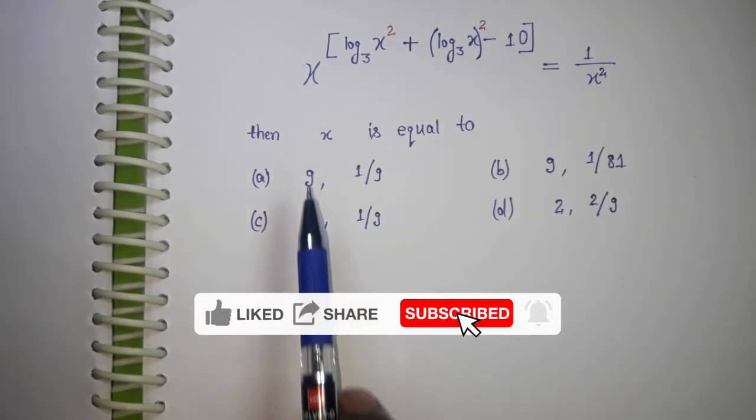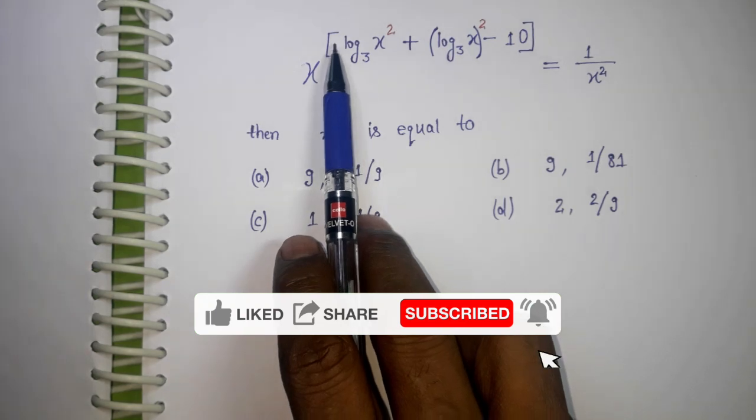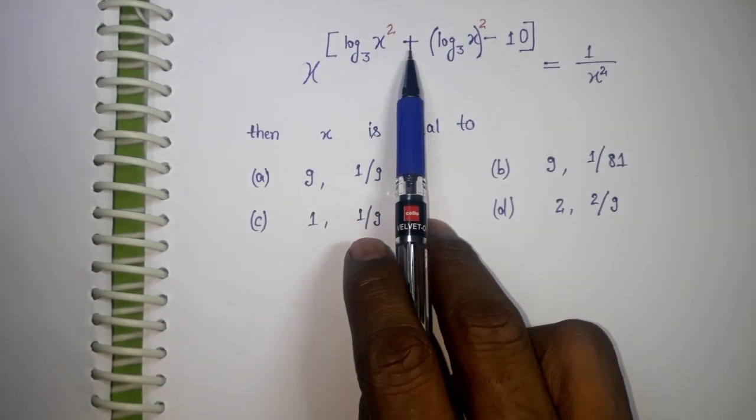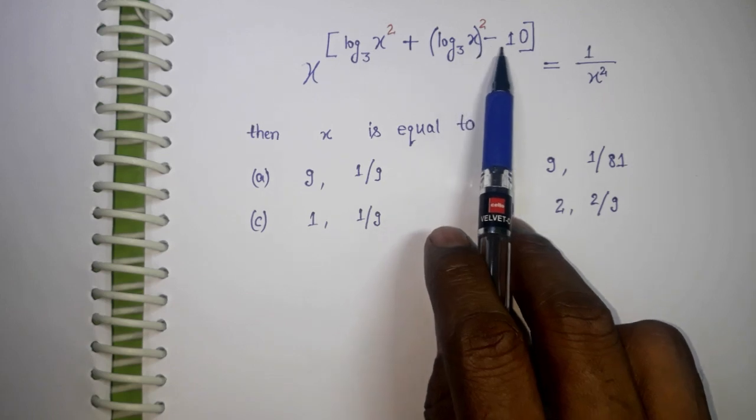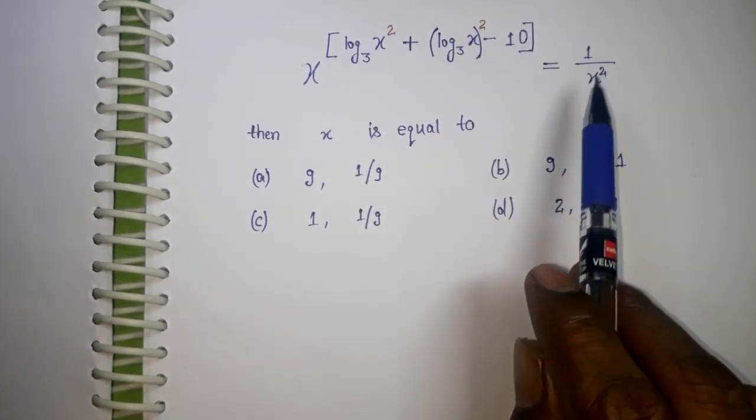x to the power [log₃(x²) + (log₃x)² - 10] equals 1/x². What will be the value for x?